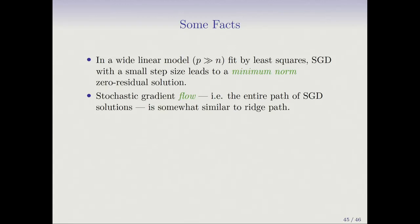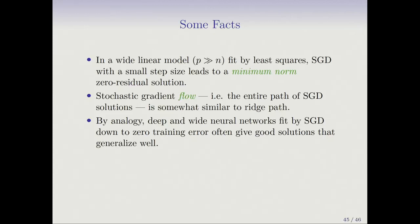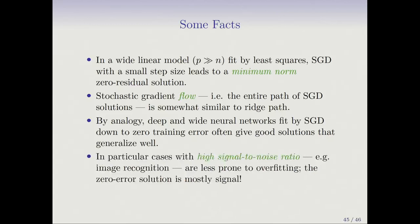Stochastic gradient descent is used in neural networks, so by analogy, running it slowly to zero residual gives a more regularized solution. Another way of describing this is stochastic gradient flow — the entire path of SGD solutions is somewhat similar to the ridge path, which is the sequence of solutions you get when slowly varying the ridge regularization parameter. Deep and wide neural networks fit by SGD down to zero training error often give solutions that generalize well, and in high signal-to-noise ratio cases like image recognition, the zero error solution is mostly signal.